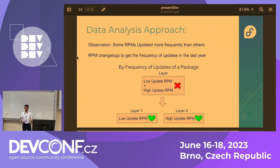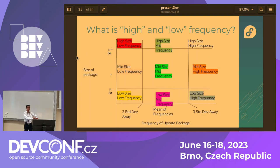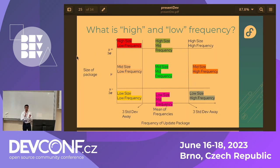So I came up with this approach based on an observation: if a layer has two packages and one of them updates at a higher frequency than the other, they should not be kept together — one would keep updating constantly and the other would just keep getting re-downloaded. So separate them out. To classify high-frequency vs. low-frequency packages, we can use simple statistics — mean and standard deviation. If a package's update frequency falls below three standard deviations from the mean, classify it as low frequency; above three standard deviations, classify it as high frequency.